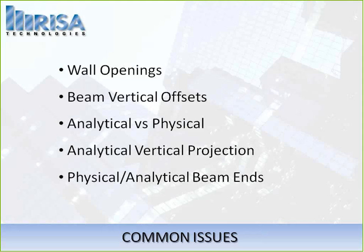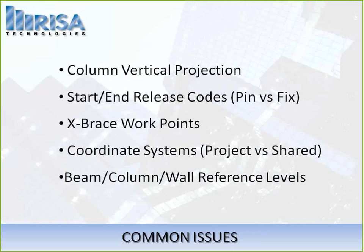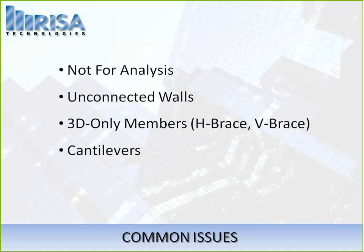Today we're going to talk about a number of common issues: wall openings, beam vertical offsets, and one of the biggest things — analytical versus physical models. We have vertical projections and physical analytical beam ends, column vertical projections for RISA Floor, start and end release codes, X-bracing with work points, coordinate systems, beam versus column versus wall reference levels, the not-for-analysis flag, unconnected walls, 3D-only members such as H-braces and V-braces with respect to the RISA Floor Link, and cantilevers.